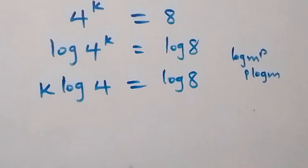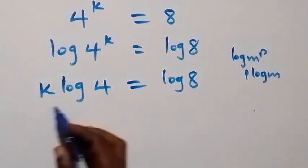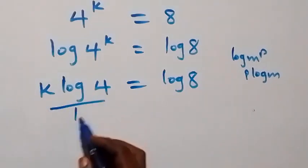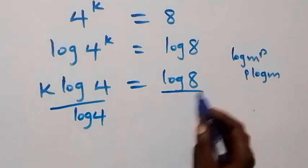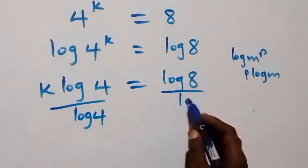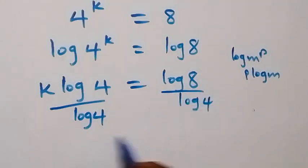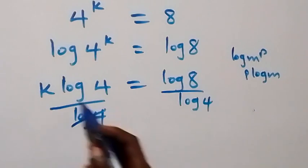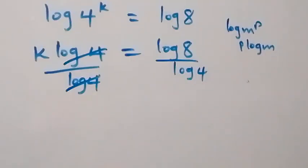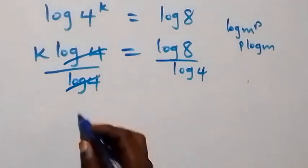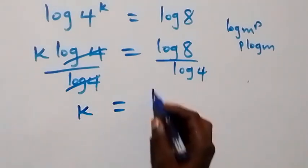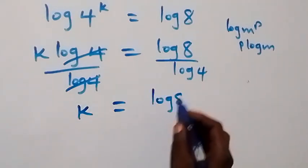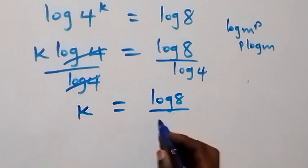Now, dividing both sides by log 4, we have log 4 divided by log 4 on the left, and we divide the right side by log 4 as well. The log 4 terms cancel out, giving us k equals log 8 over log 4.